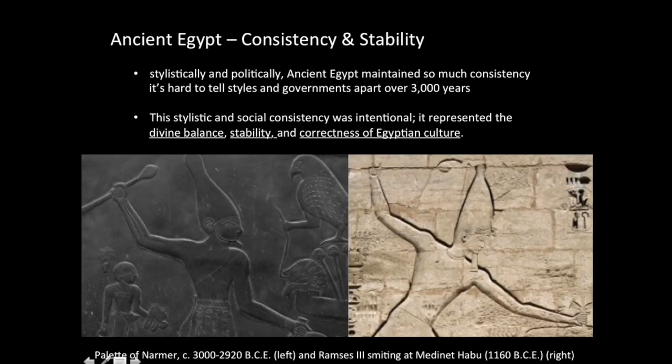Ancient Egyptian consistency and stability: compared to other civilizations which were cropping up at the time, like those in the ancient Near East — which saw an incredible amount of changing culture, religion, and power over a 3,000-year span — ancient Egypt was incredibly stable. The oldest Egyptian royal monuments, like this palette, show the exact same royal garb and stance which would be used by Ptolemaic kings nearly 3,000 years later.